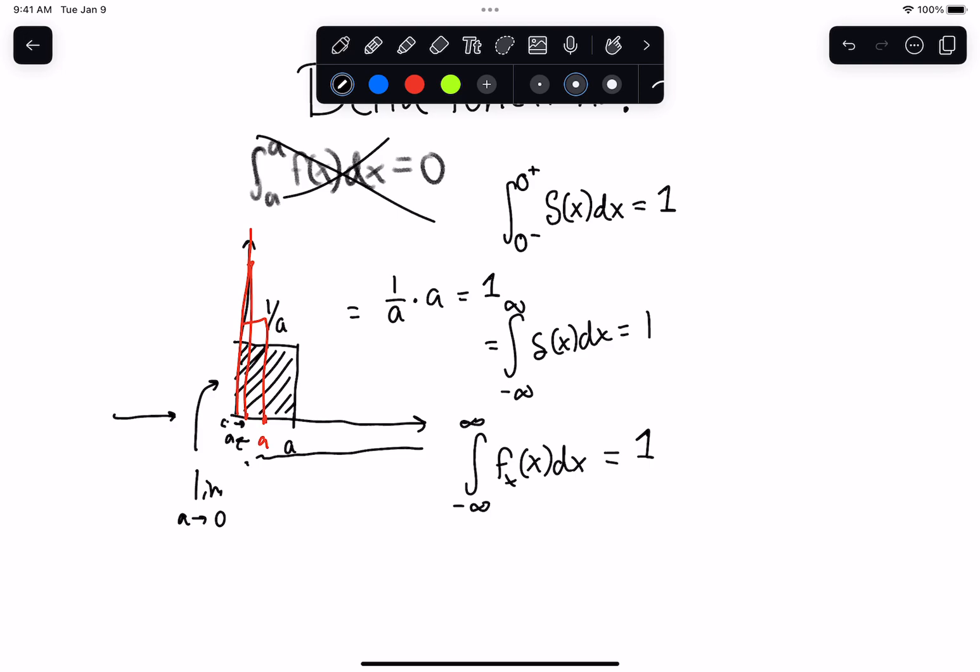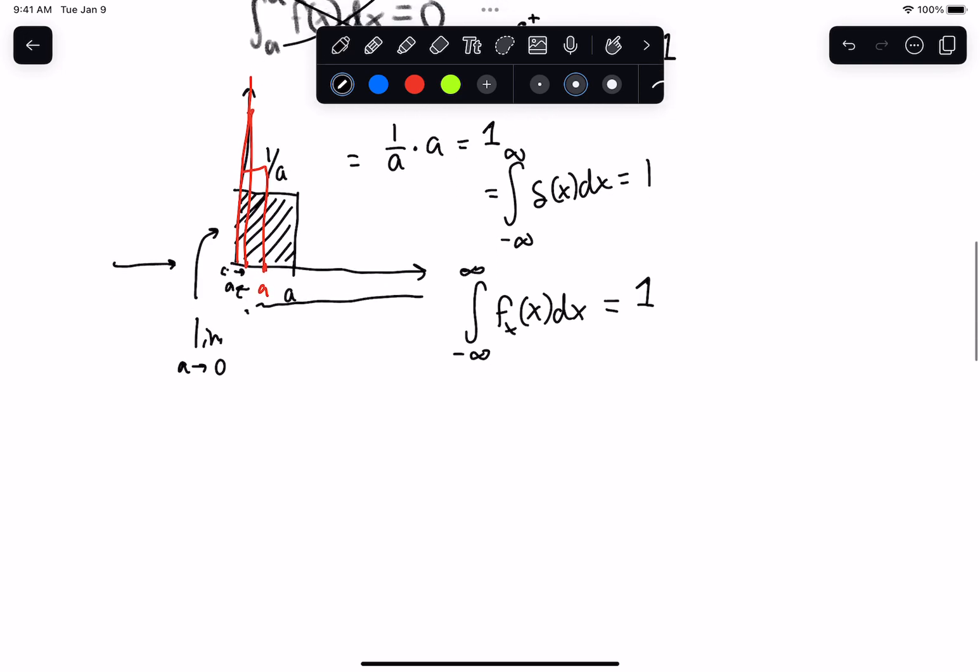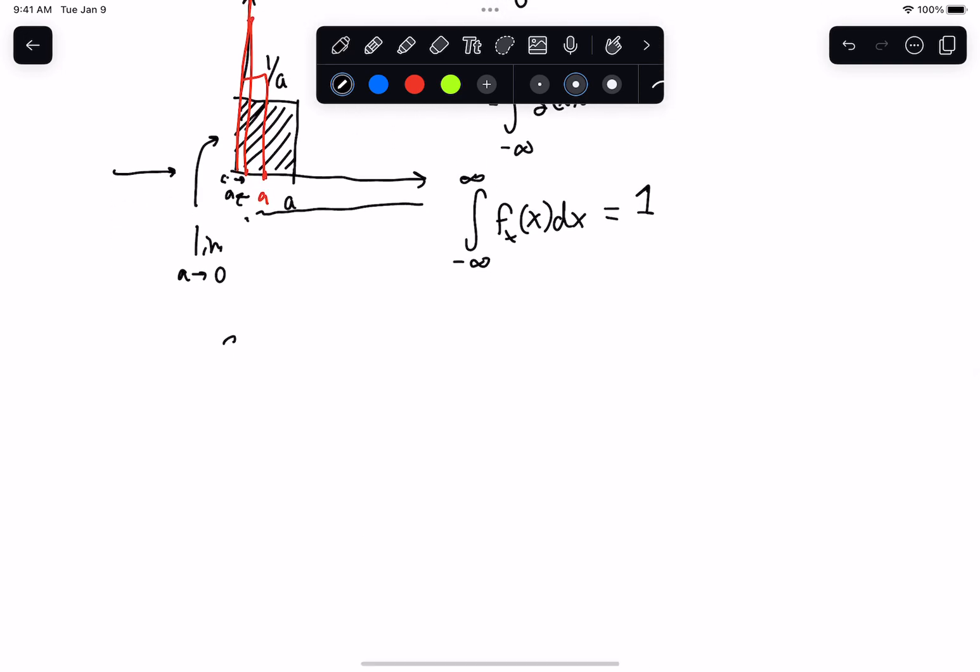And you're going to see us use delta functions all the time because they're very helpful abstraction. There's some other really cool things you can do with delta functions that are worth saying. So usually we say delta of x, and the way we basically show this is we have our axis, and we basically put this here with a height of 1.